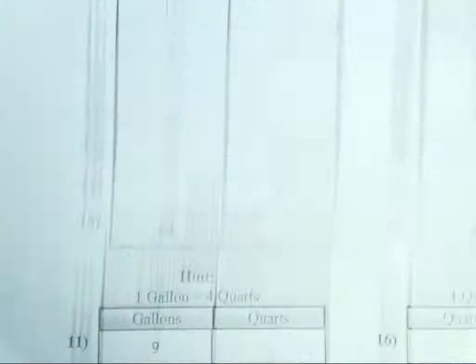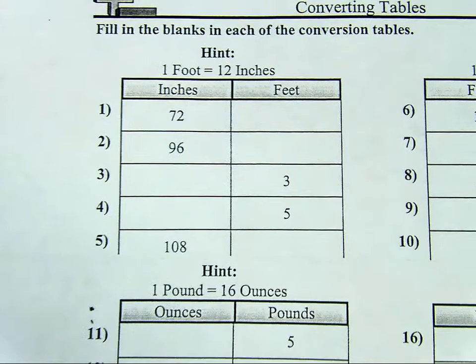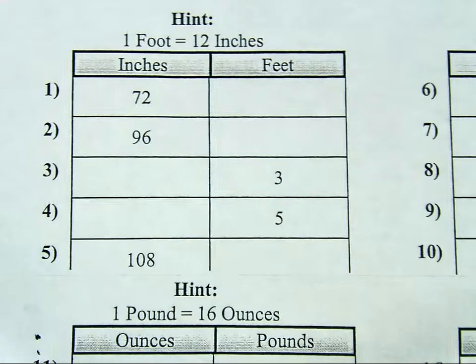On the back, we have a bunch of conversions we have to do. Up here, we have the same thing we were doing on the other side, just in table form. We have 72 inches. How many feet do we have?